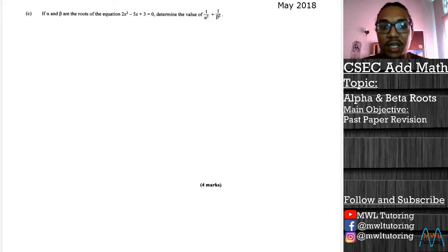So let's take a look at this one. This one is from the May 2018 exam and it reads: if alpha and beta are the roots of the equation 2x squared minus 5x plus 3 equal to 0, determine 1 over alpha squared plus 1 over beta squared.